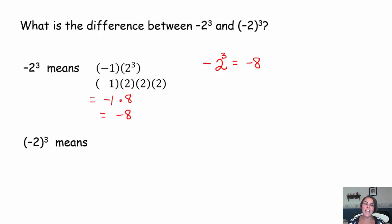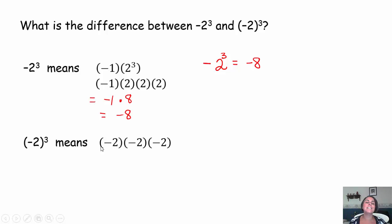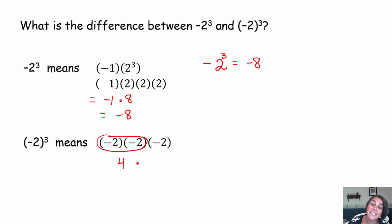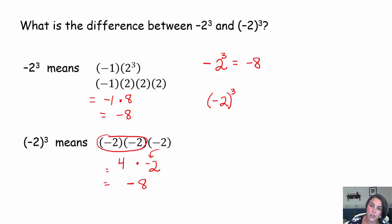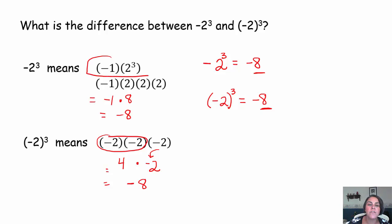A base of negative 2 raised to the third power actually means something different. It means negative 2 times negative 2 times negative 2. I love to pair up pairs of negative factors. Negative times a negative is a positive — 2 times 2 is 4. But I still have this extra factor of negative 2 trailing along. Positive times a negative is a negative — 4 times 2 is 8. So this expression, negative 2 in parentheses raised to the third power, also happens to be negative 8.